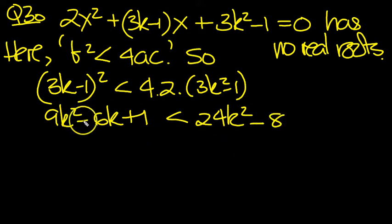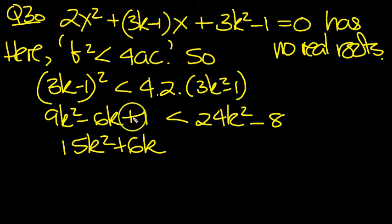Let's move everything over to one side and write it from right to left. So 9 becomes -9, 24 take 9 is 15k². Move the -6k over to become +6k, and the +1 becomes -1, which along with the -8 makes -9.